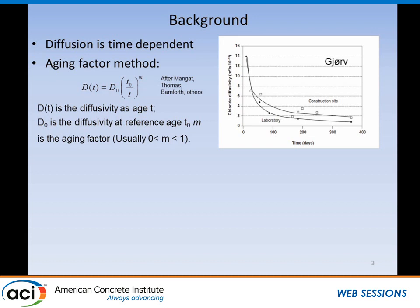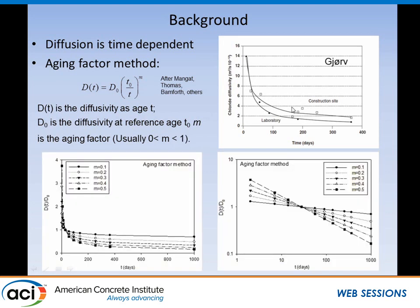Mangat, Thomas, Banfill, and others have suggested that the diffusivity is a function of time. If you measure the diffusivity over time, you can use this equation to estimate how the resistivity is going to change as a function of time. If you do a few measurements and do the fitting, the value of the aging factor M typically ranges between 0 and 1. If we normalize DT and D0 in linear scale or log-log scale, you get these types of results for five different values of N.